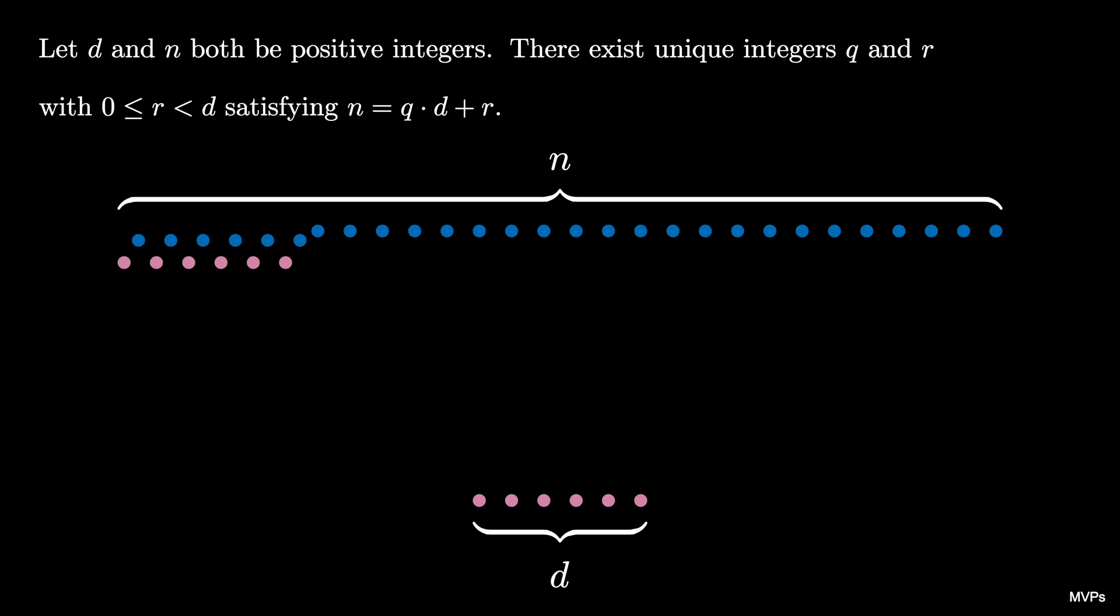To prove the existence of q and r we start subtracting copies of d from n. As we do this we create a list of decreasing positive integers. By the least integer principle of positive integers we know that this set must have a least element as we see here where we can no longer subtract off d.